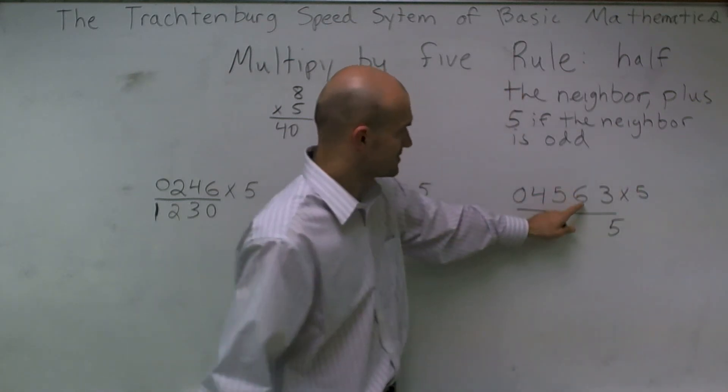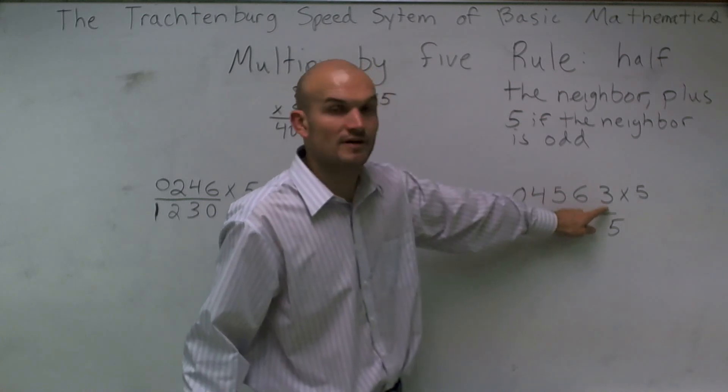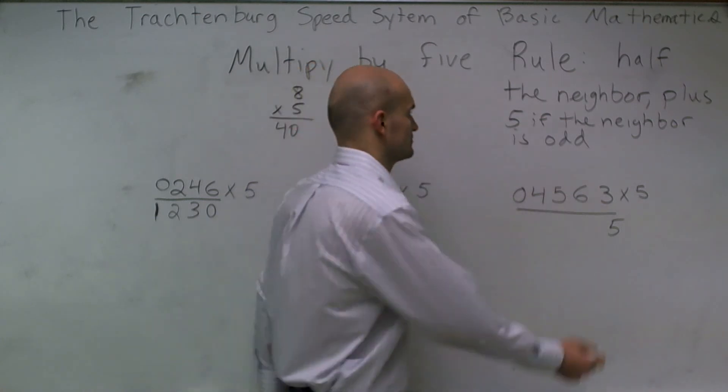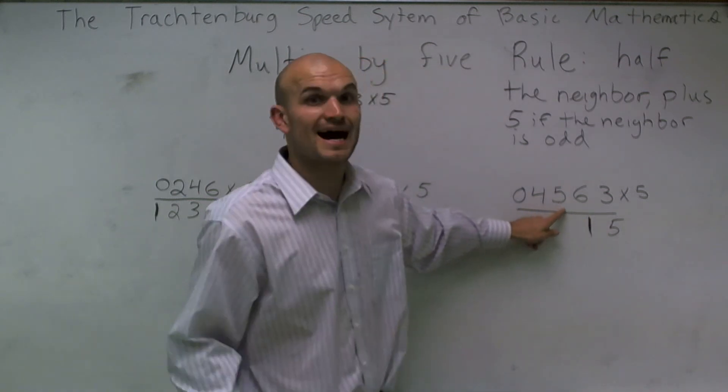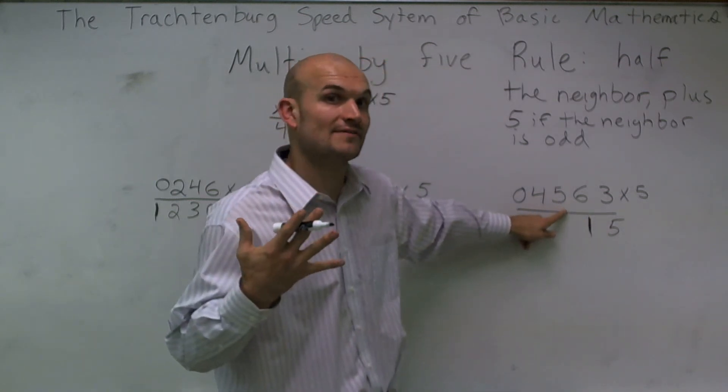Then I move to the next one, 6. This is even, so half of 3 is 1. Move to the next one. This is odd, so we need to make sure that we're going to add 5 to our answer.